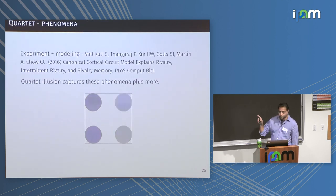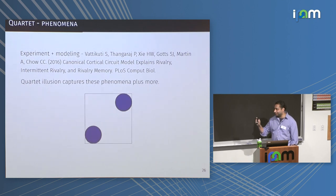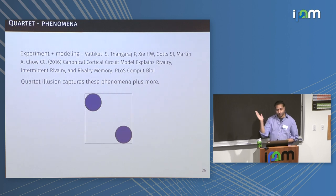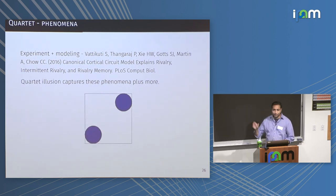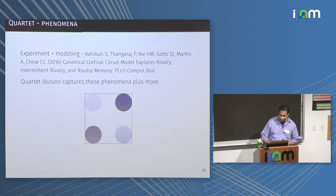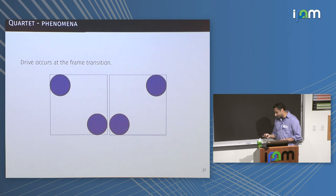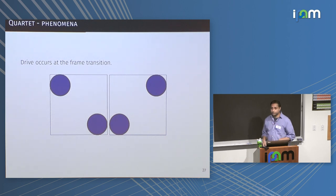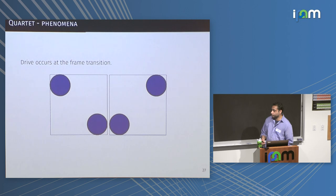I'm going to talk about the quartet because it adds even more constraints. The quartet is actually alternating between still frames — blinking dots — but motion perception overrides that. So there are two illusory phenomena: apparent motion, and rivalry where the direction switches. We were doing these experiments because we thought it would be easier to report than binocular rivalry. Some observers see back-and-forth motion, others see up-and-down motion, and it switches over time.